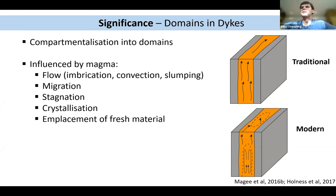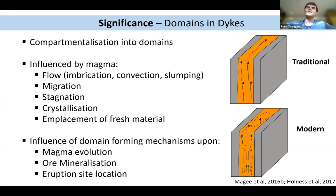And crystallization of magma and the emplacement of fresh material. So the influence of these domain forming mechanisms is still largely unknown in terms of how it impacts magma evolution and or mineralization and the eruption site locations. So really understanding this domain formation is really important in understanding how magma moves through the crust.